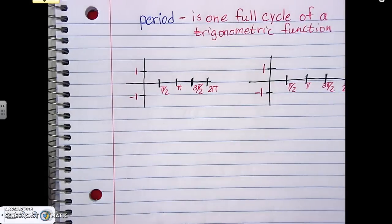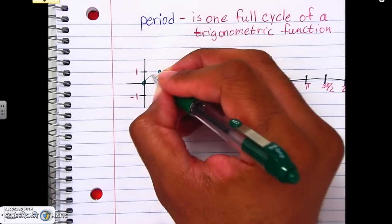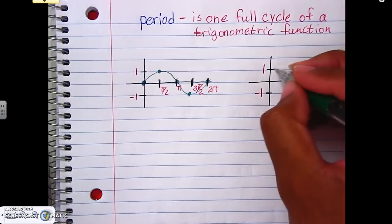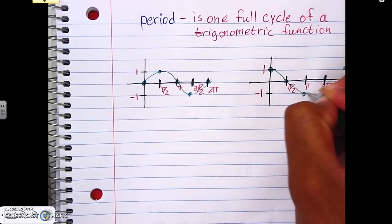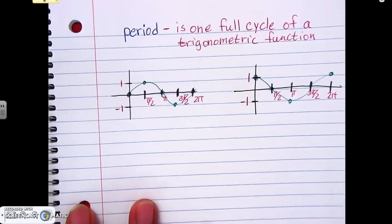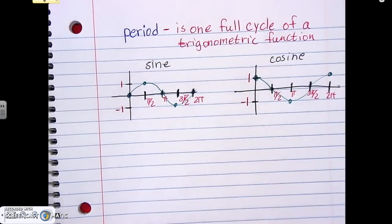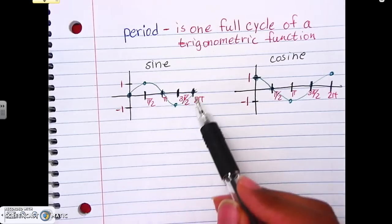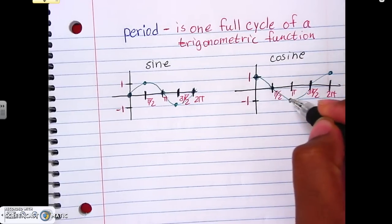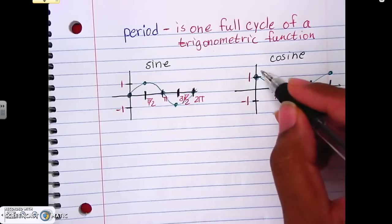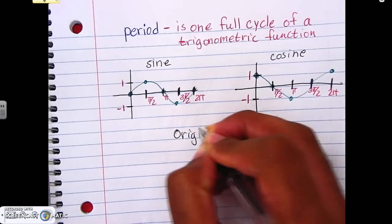The sine graph comes this way — this is our sine function, and this is our cosine function. For each one, one full cycle going up and then coming back down to the start is 2π. It takes 2π to complete one full cycle. Same thing for cosine — it takes 2π to get from the first part all the way through to get back to that same point again.